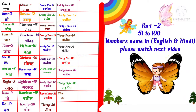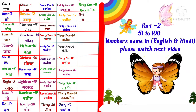T-H-I-R-T-Y N-I-N-E, 39 means thirty-nine. F-O-R-T-Y, 40 means forty. F-O-R-T-Y O-N-E, 41 means forty-one. F-O-R-T-Y T-W-O, 42 means forty-two.